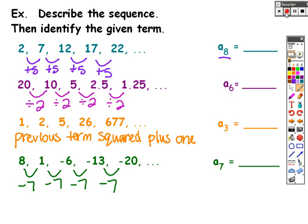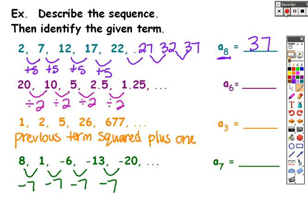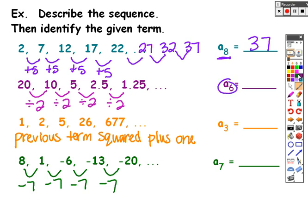Here are the patterns. Whenever I'm trying to find the pattern of a sequence, I look at what's happening in between the terms. For the first sequence, you're adding 5 to get to the next term. If I want to find a sub 8, I'd have to find a sub 6, a sub 7, then a sub 8. The value of the 8th term is 37. For the second sequence, we're dividing by 2 each time. To find the value of the 6th term, divide the 5th term by 2: 1.25 divided by 2 is 0.625.